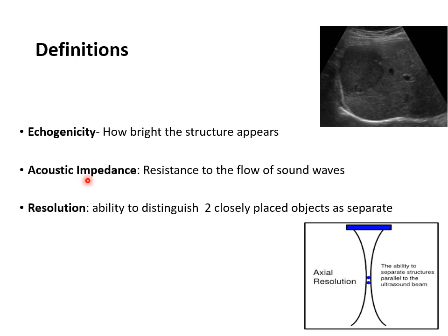Acoustic impedance: impedance is resistance, so resistance to the flow of sound waves is acoustic impedance. The higher the density of a given structure, the more the impedance. For example, bone has more resistance compared to blood and air.